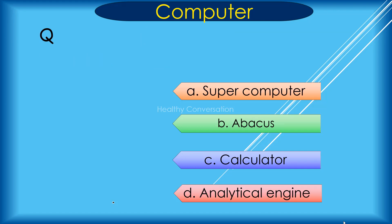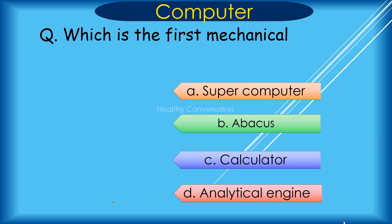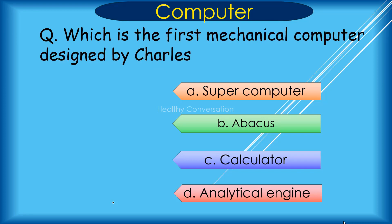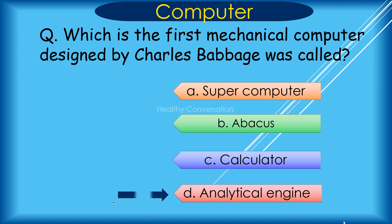Question: Which is the first mechanical computer designed by Charles Babbage? A. Supercomputer, B. ENIAC, C. Calculator, D. Analytical Engine. Correct answer is D. Analytical Engine.